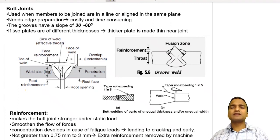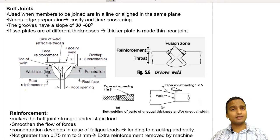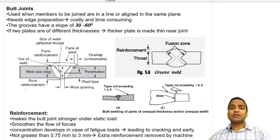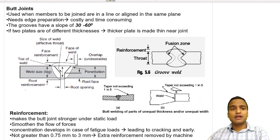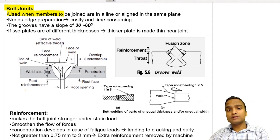Hello and welcome, dear students. In this video we will discuss the design philosophy behind welded connections. A common type of weld is the butt joint. In these joints, the connecting members are joined when they are aligned in the same plane.